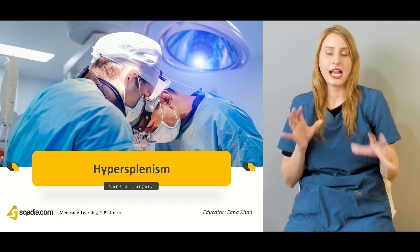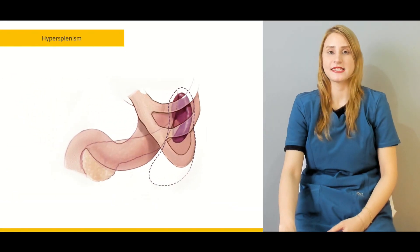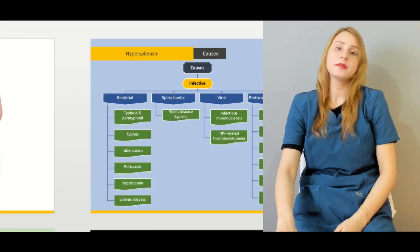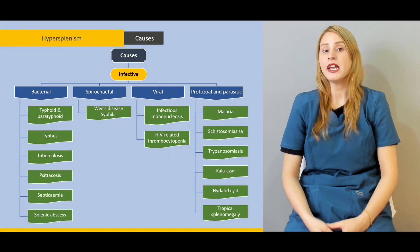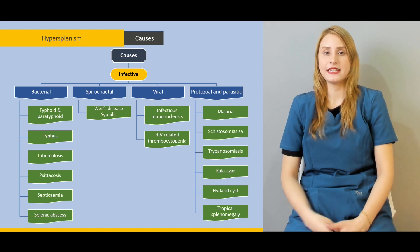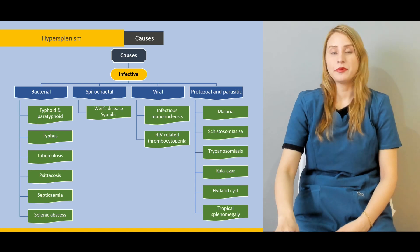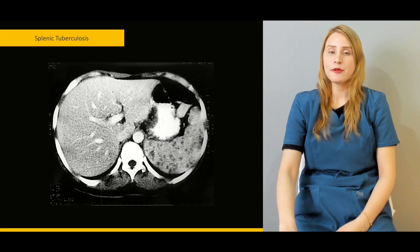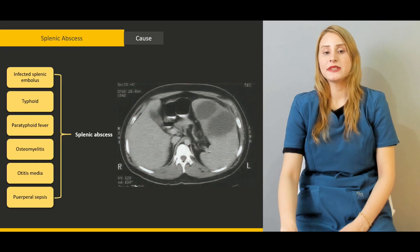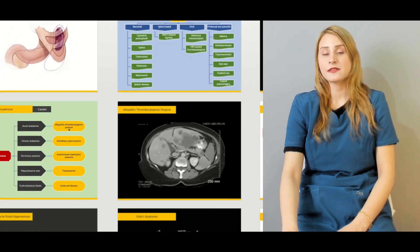We'll be talking about the difference between hypersplenism and splenomegaly. The outline of today's lecture covers the surface anatomy and surface landmarks of the spleen, then the causes of hypersplenism — especially the infective causes including bacterial, spirochetal, viral, parasitic and protozoal infections. We'll also cover splenic tuberculosis, the different causes of splenic abscess, and how splenic abscess causes splenomegaly.